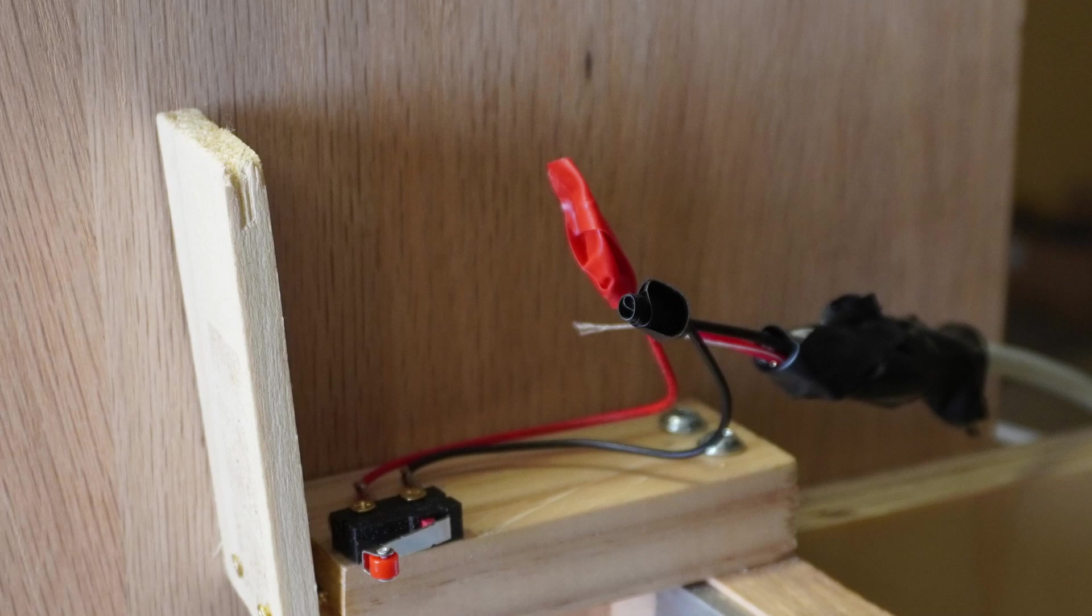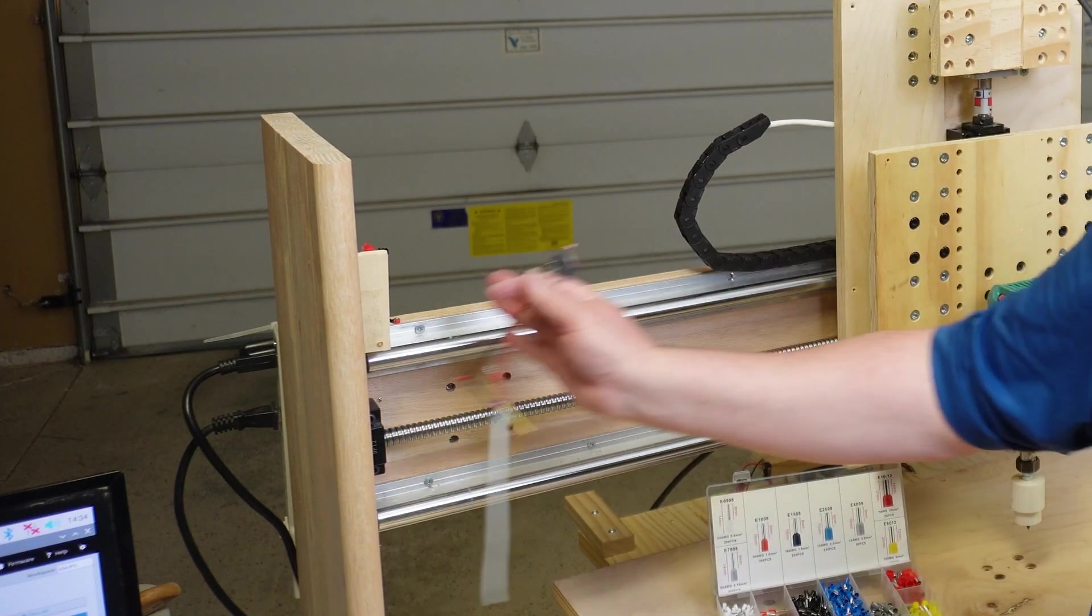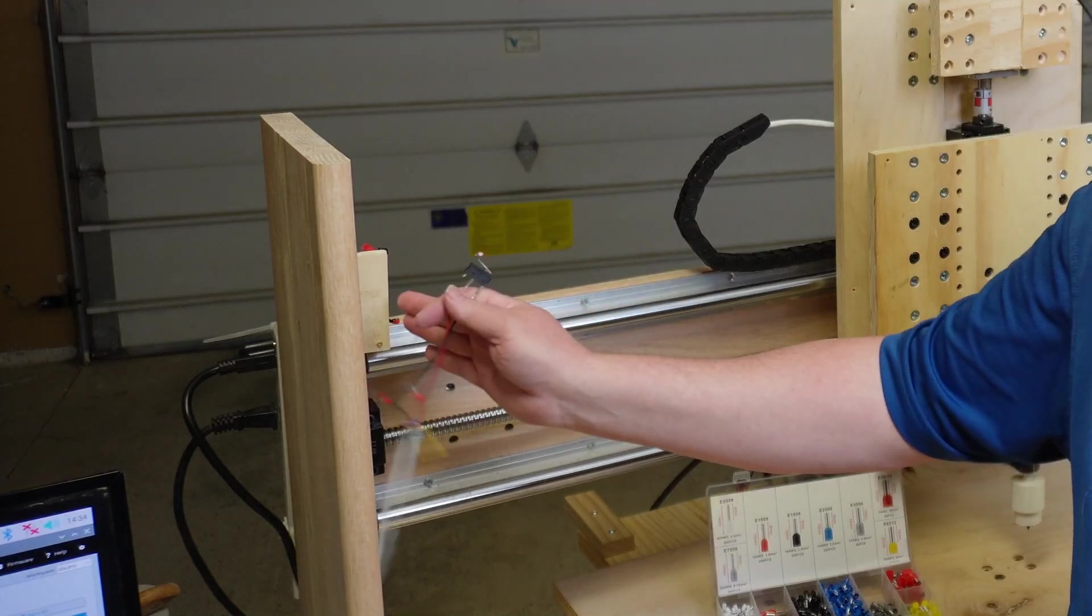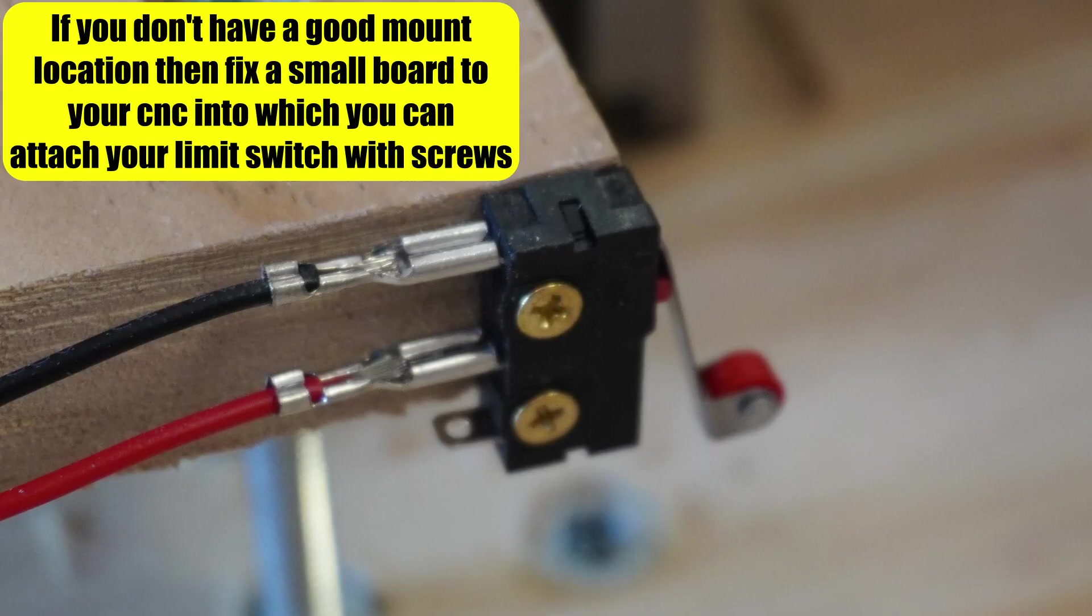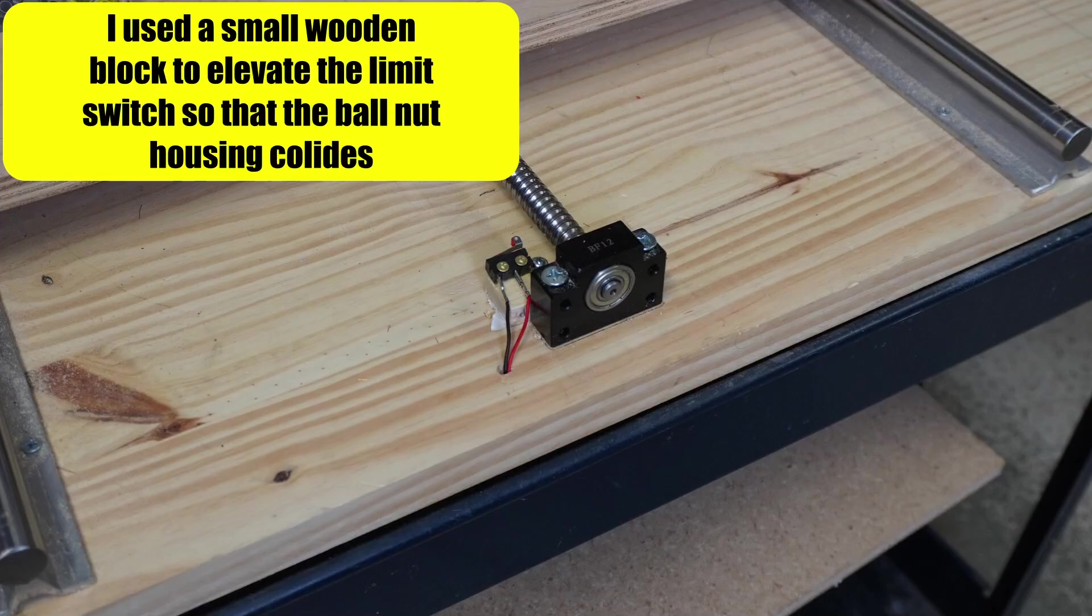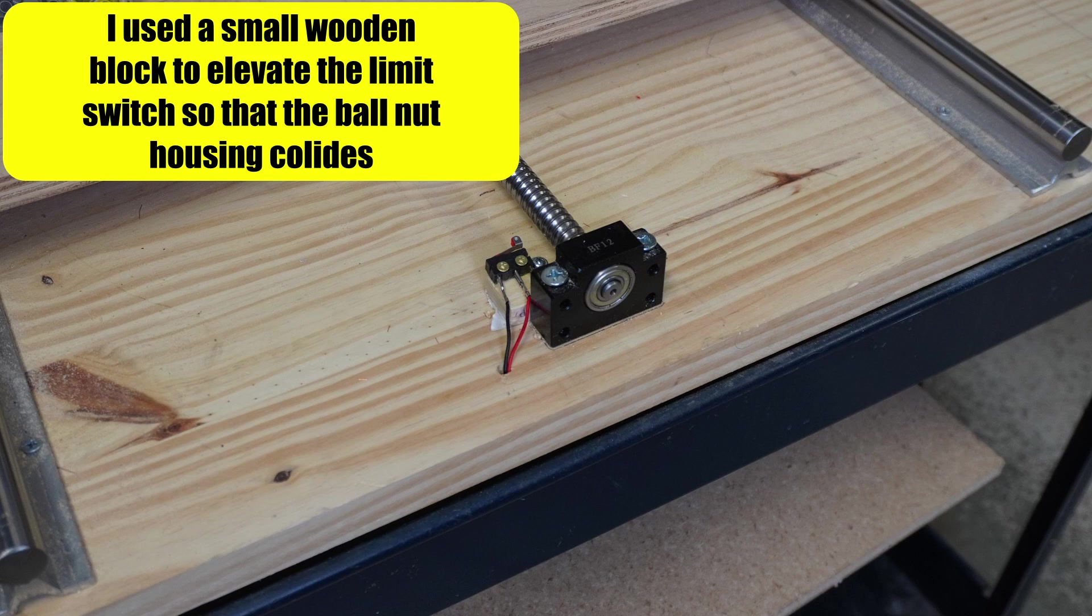Then it's just a matter of mounting your limit switch so that you have your axes collide at the max distance that it can move. There's screw holes in the limit switches to do that. It's fairly straightforward on the X-axis. On the Y-axis, I actually have it down here so that the ball nut housing hits.